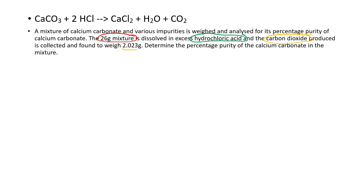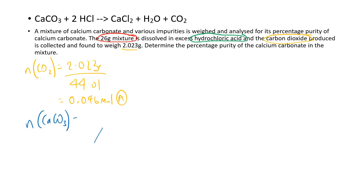We start off with the number of moles of our product because we already have a balanced equation. The number of moles of CO₂ = 2.023 ÷ 44.01 = 0.046 moles. Save that as A. Using that number of moles of CO₂, we work out the number of moles of CaCO₃ — our desired reactant — which is the number of moles of CO₂ times the stoichiometric ratio of 1/1, giving us A moles.